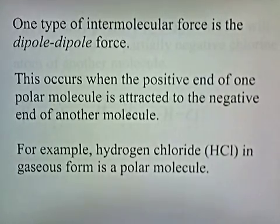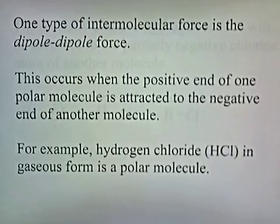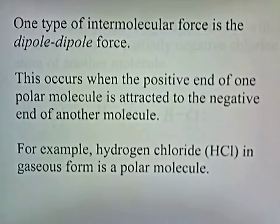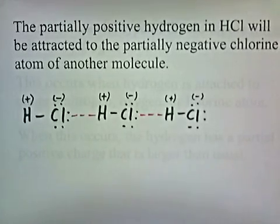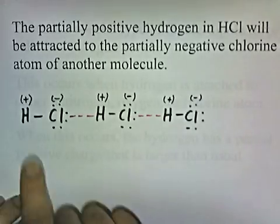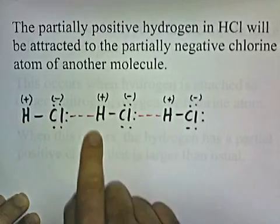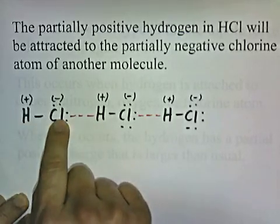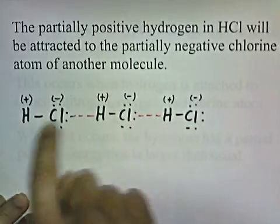One type of intermolecular force is the dipole-dipole force. This occurs when the positive end of one polar molecule is attracted to the negative end of another molecule. For example, hydrogen chloride (HCl) in gaseous form is a polar molecule. The partially positive hydrogen in HCl will be attracted to the partially negative chlorine atom of another molecule. HCl is a polar molecule — one end is negative, the other is positive — so the positive end of one HCl is going to be attracted to the negative end of another. These red lines indicate bonding between the molecules.